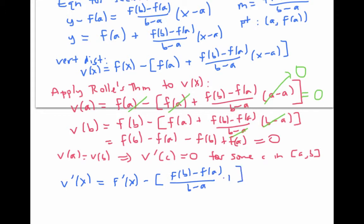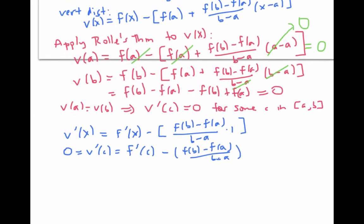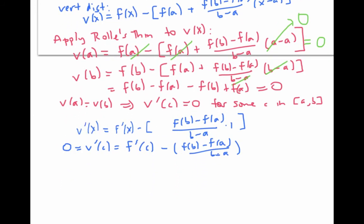So for that lucky value of c, we have zero is equal to v'(c), which is, plugging in c for x, f'(c) minus [f(b) - f(a)] / [b - a]. If I simply rearrange this equation, I get that f'(c) is equal to [f(b) - f(a)] / [b - a].